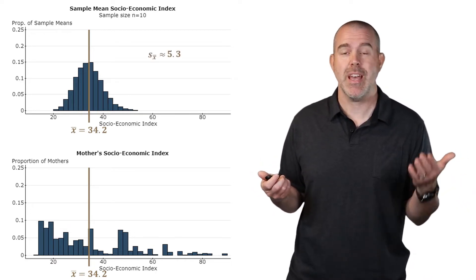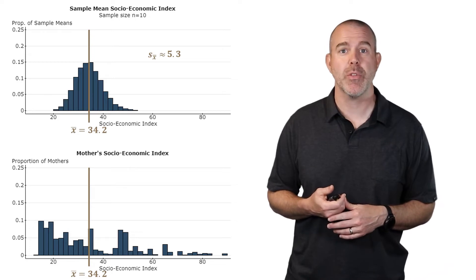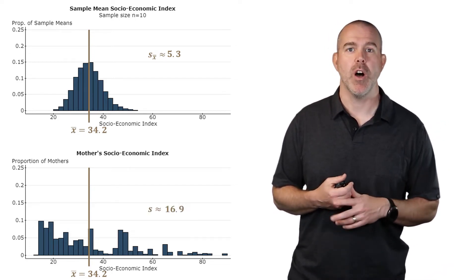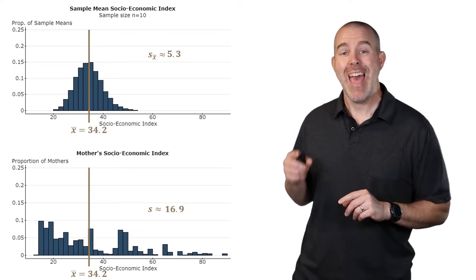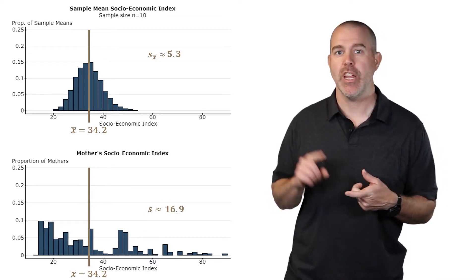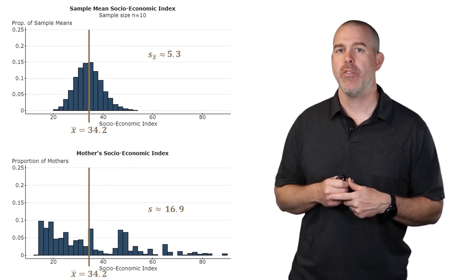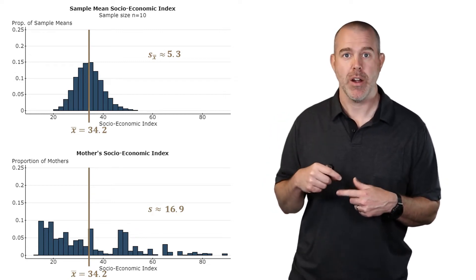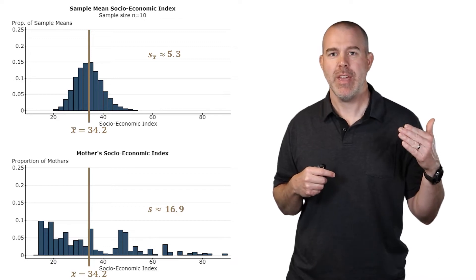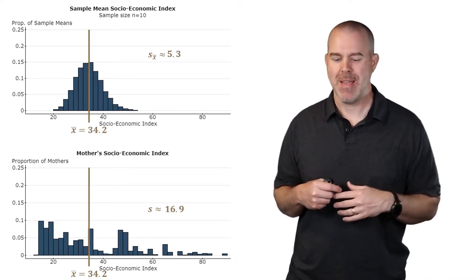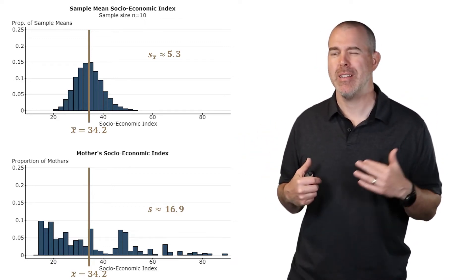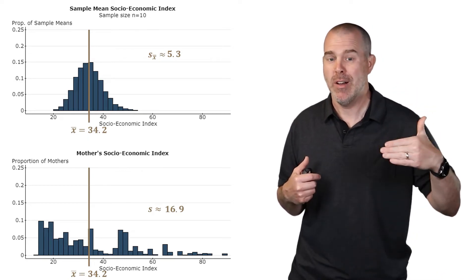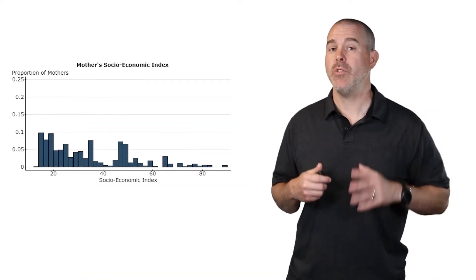We can see that here if we put the mother's socioeconomic status back up. We look at the mean, 34.2 for all of the sample means. So the mean of the sample means and the mean of the population, 34.2, which again should make sense. On average, your sample mean should be what the population mean is. The standard deviations, as we said, it's much smaller, 5.3 for the sample means and 16.9 overall. By the way, notationally, S is the sample standard deviation with a subscript for the sample means, S sub X bar.